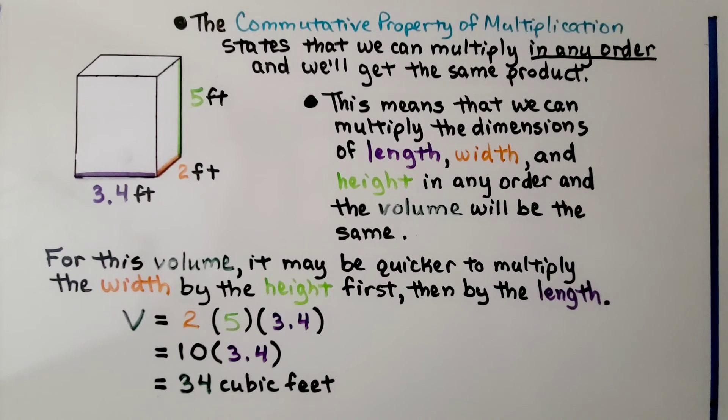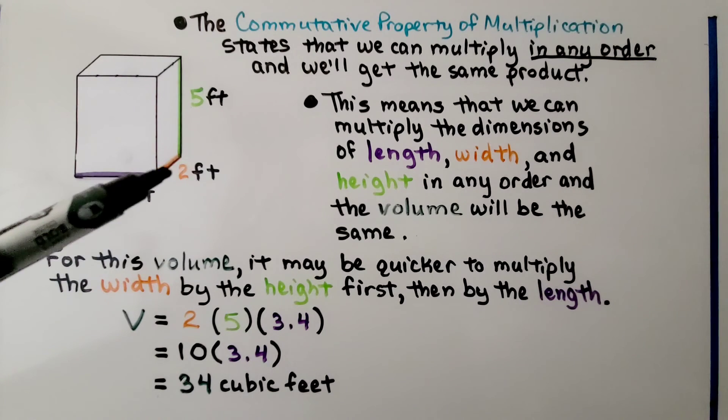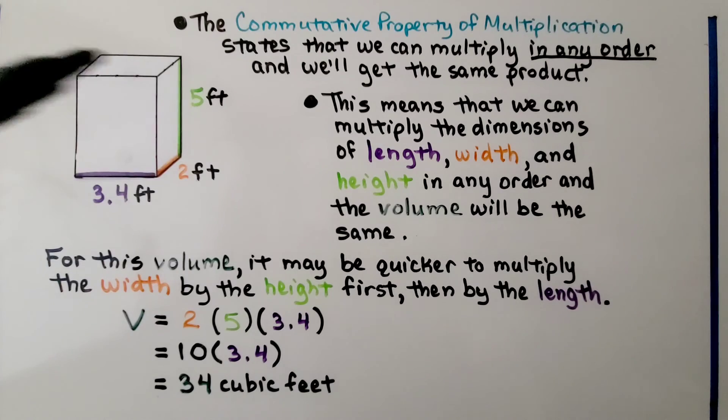The commutative property of multiplication states that we can multiply in any order, and we'll get the same product. This means that we can multiply the dimensions of length, width, and height in any order, and the volume will be the same. For this volume, it may be quicker to multiply the width, two, by the height, five, first.